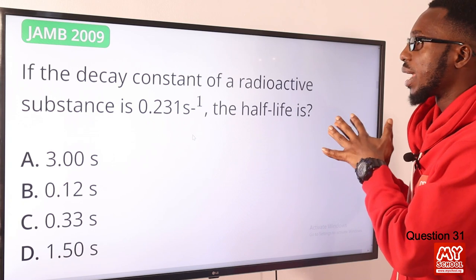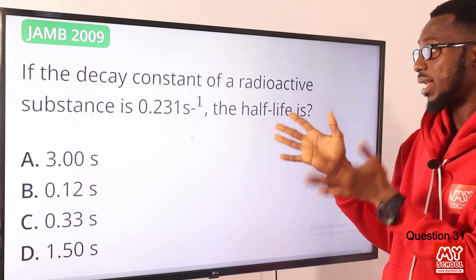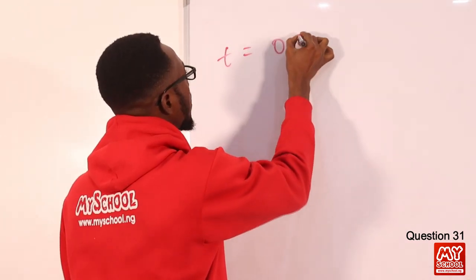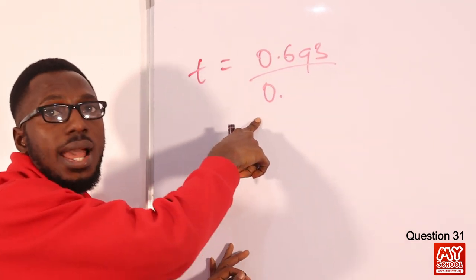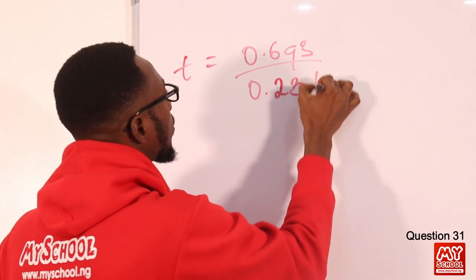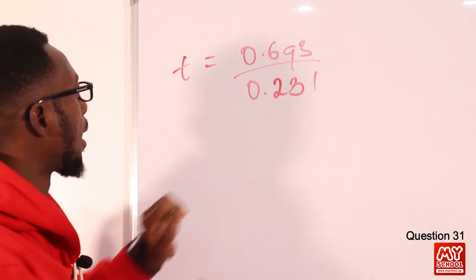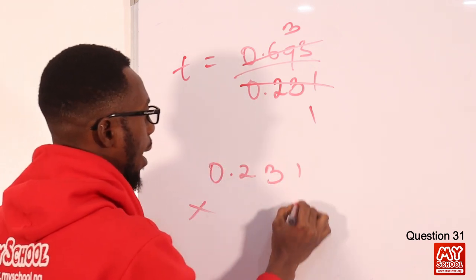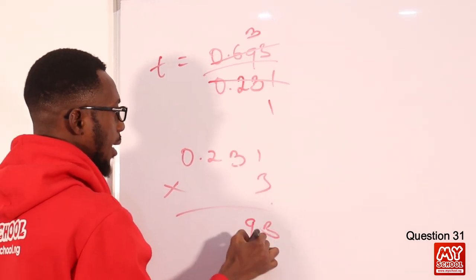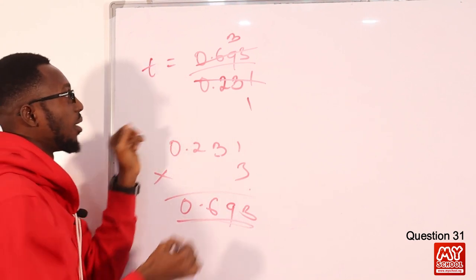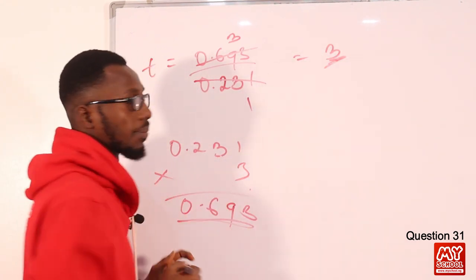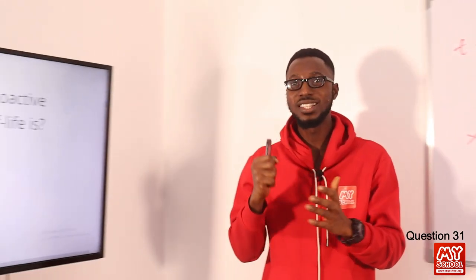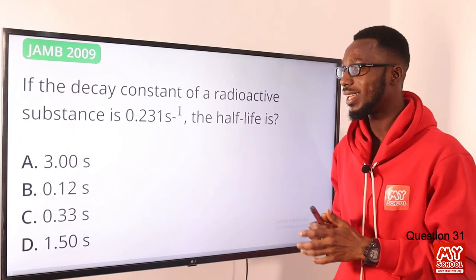Question 31: If the decay constant of a radioactive substance is 0.231 per second, the half-life is what? Using T½ = 0.693/λ = 0.693/0.231. Observing that 0.231 × 3 = 0.693, we get T½ = 3 seconds. Option A is the right option.